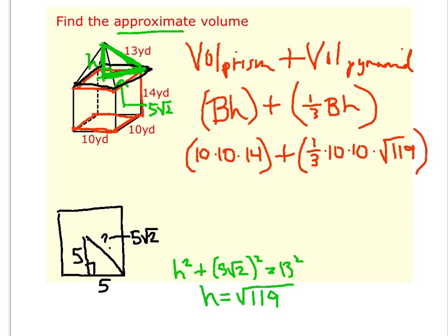And then ten times ten times fourteen is 140. One-third times ten times ten times square root of 119 is approximately 37. And so when I add those together, I should get about 177 cubic yards for the volume of this shape.